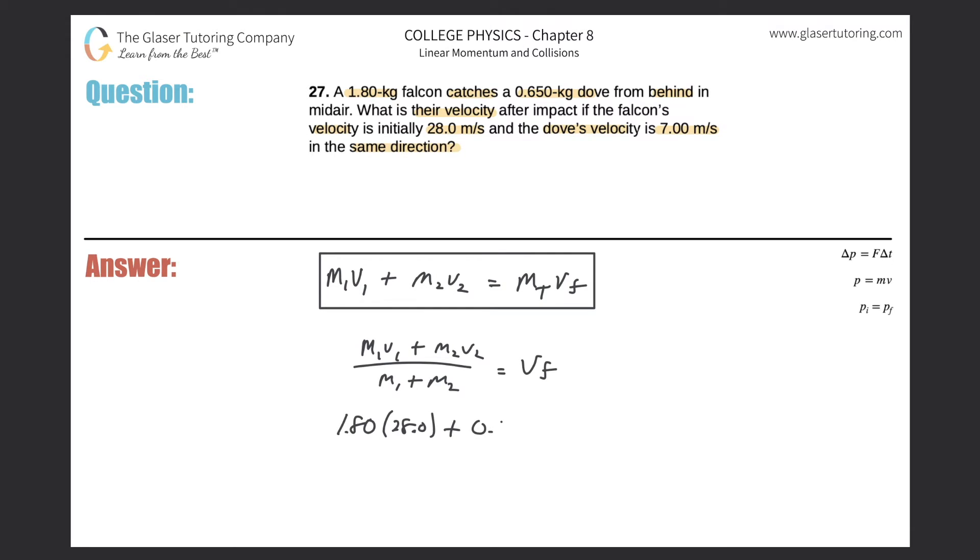Then the dove had a mass of 0.650 kilograms, and its initial velocity in the same direction, therefore the signs of the velocities of the falcon here and the dove here will be the same. So that's 7.00, all divided by the total mass, so 1.80 plus 0.650, and that's equal to the final velocity.